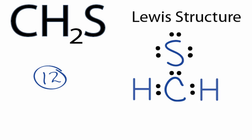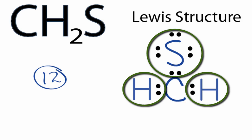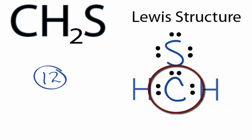So we've used all 12 valence electrons for the CH2S Lewis structure. The hydrogens each have two valence electrons, so their outer shells are full. The sulfur has eight, so it has an octet. But the carbon only has six valence electrons, so we're going to need to fix that — it does not have a full outer shell or octet.